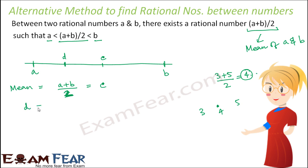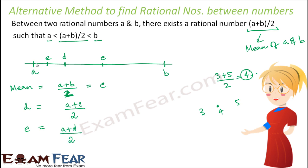D equals the mean of A and C, that is (A plus C) divided by 2. Similarly, we find the mean between A and D to get point E, where E equals (A plus D) divided by 2. Then the mean of A and E gives point F, where F equals (A plus E) divided by 2. So we've found four rational numbers C, D, E, F between A and B, and by continuing this process we can find as many as we like.